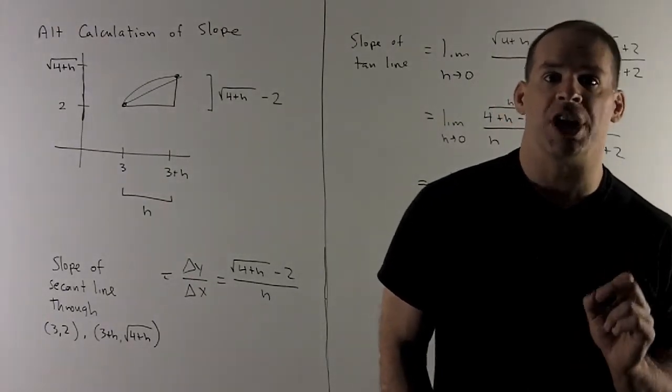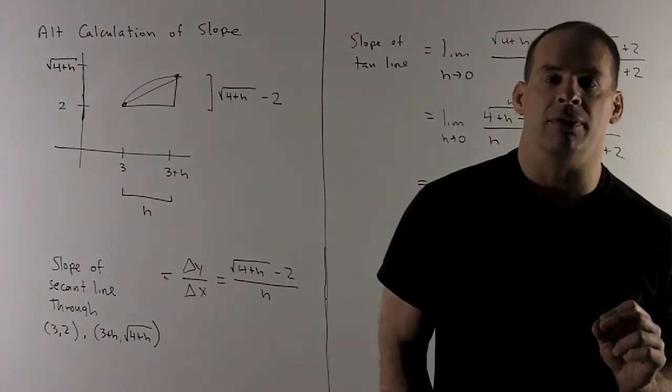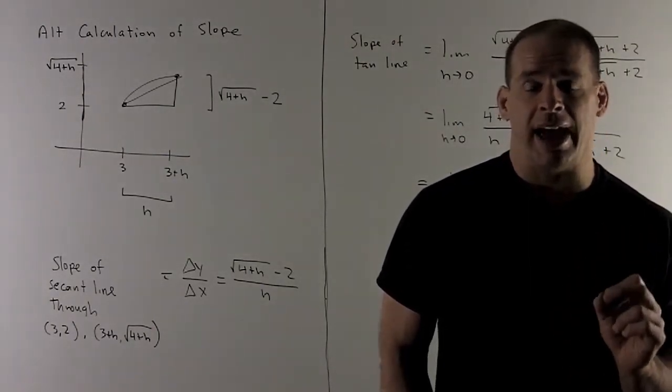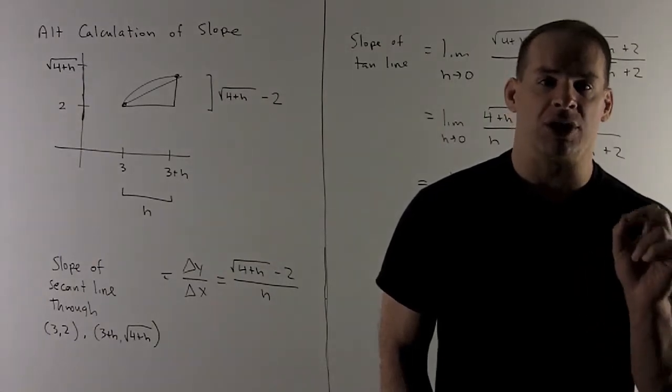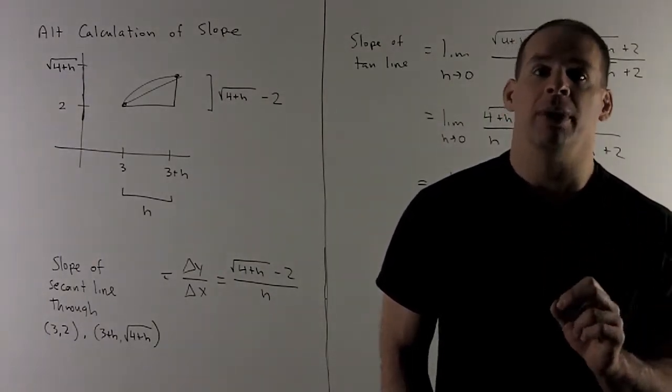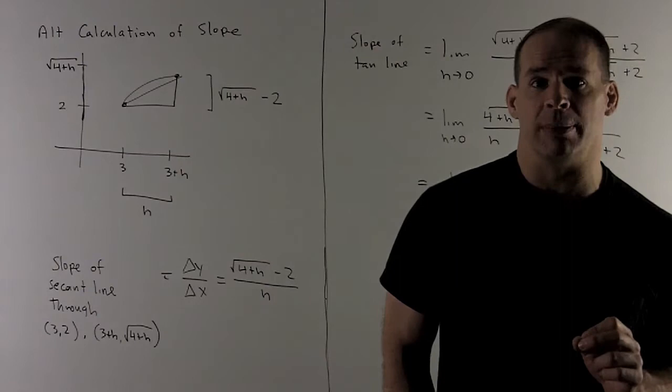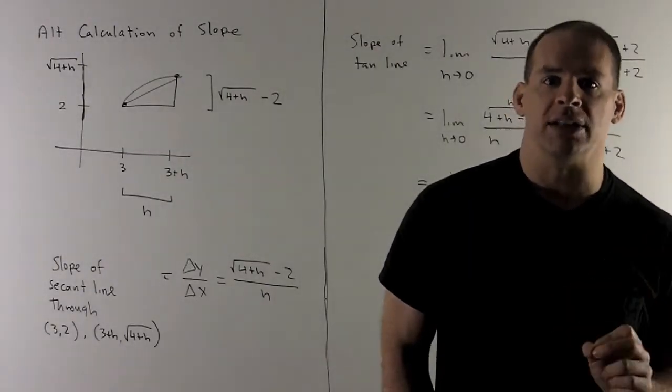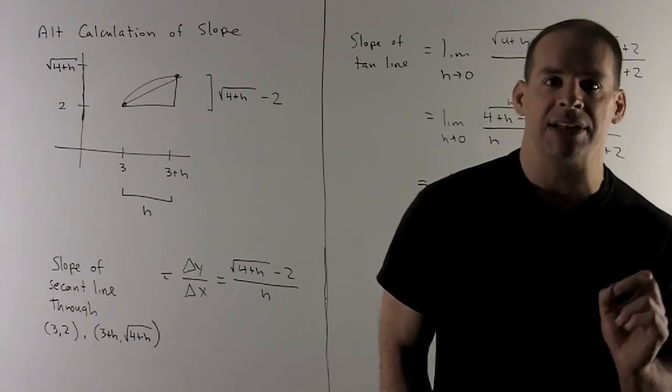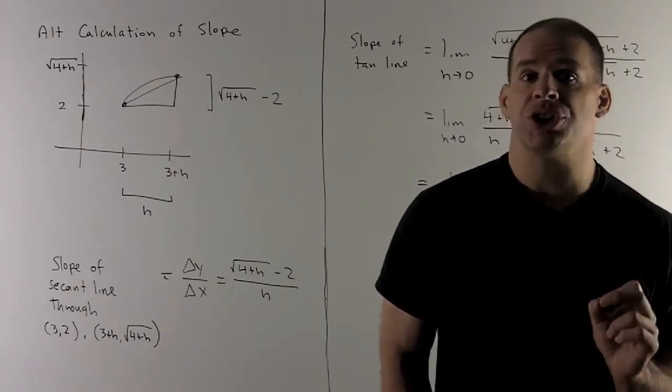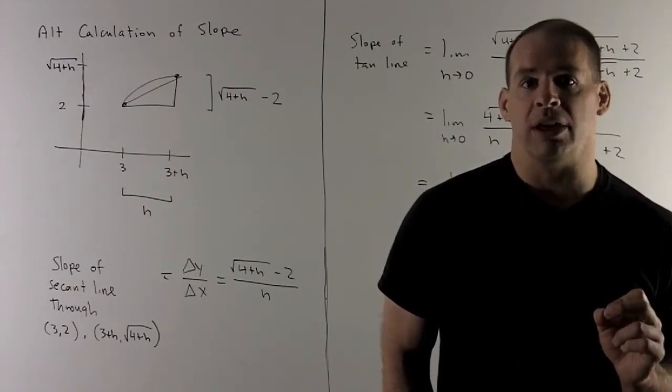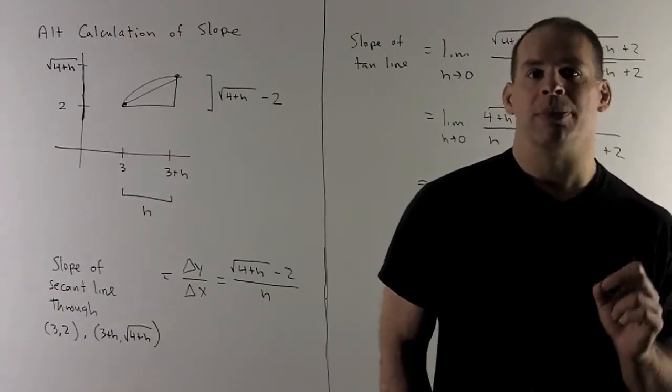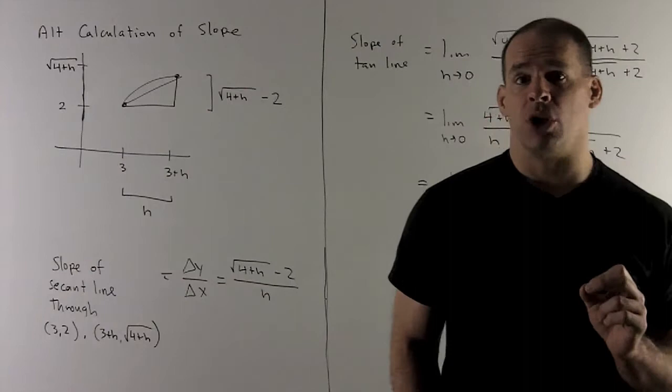How does that change things? The picture doesn't change at all, except now instead of where I had x, I'm going to put 3 + h, and where I had our function √(x+1), we're going to put 3 + h in for x, which gives me √(4+h). So now Δy and Δx are going to change. Δx is just h, and our Δy is √(4+h) - 2. So that's our new gadget for slope of the secant line.